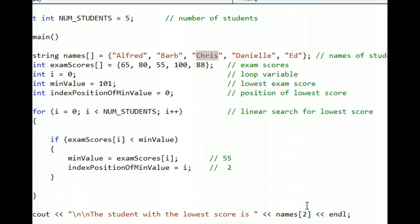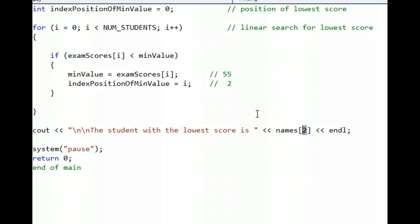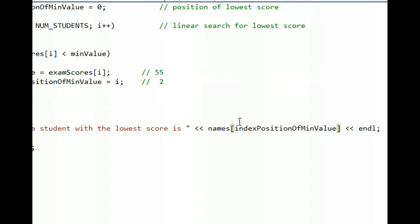Now this is sort of cheating. I still have a 2 typed in here. Don't hardwire your output with just a number like that. I need that variable, indexPositionOfMinValue that I made up. I need that variable to be used in the square brackets for this program to work every time.